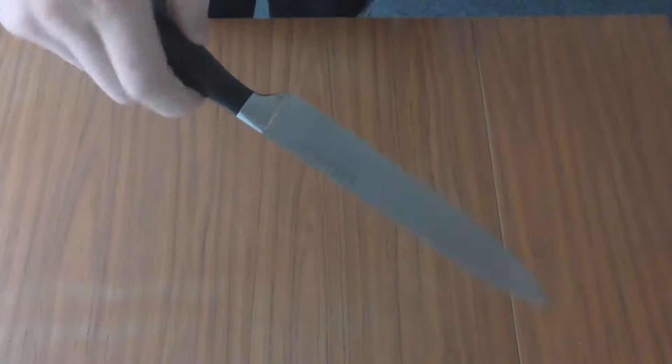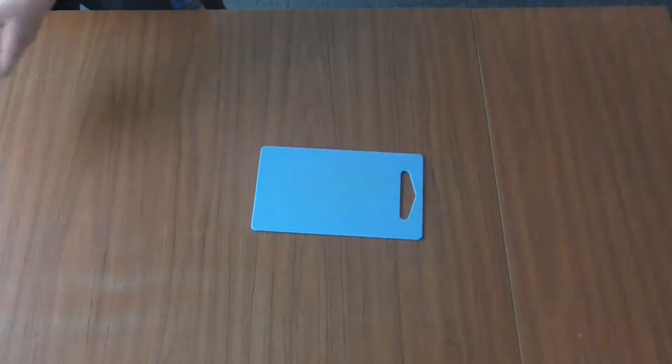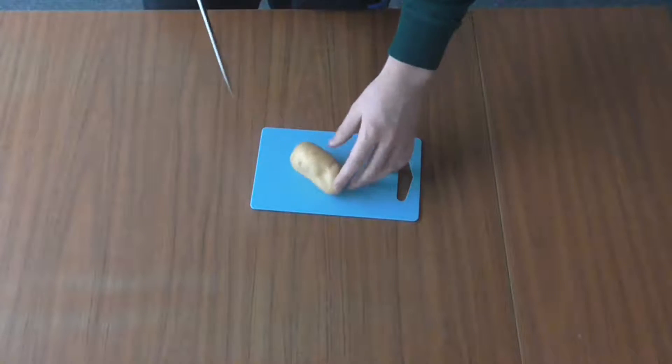Also a measuring cup is really handy because you need some water and also a knife to cut all the potatoes in smaller bits. So we're starting with cutting up all the potatoes in smaller bits with the knife.